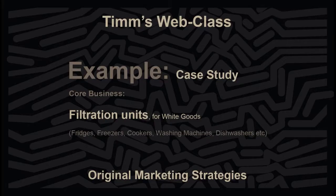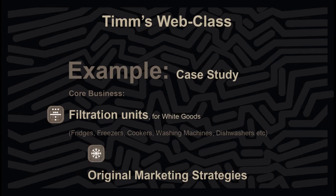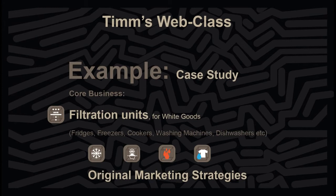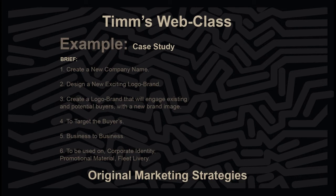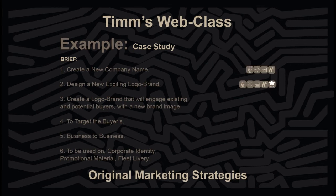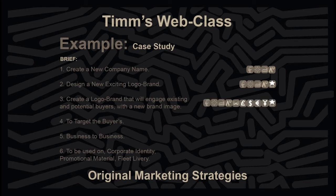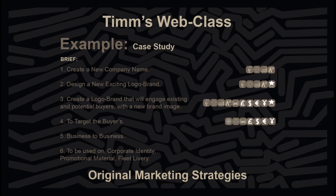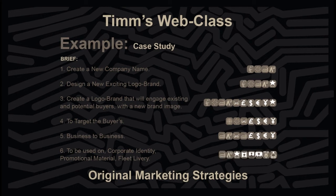Example Case Study: Core business — filtration units for white goods: fridges, freezers, cookers, washing machines, and dishwashers. The brief: 1. Create a new company name. 2. Design a new, exciting logo brand. 3. Create a logo brand that will engage existing and potential buyers with a new brand image. 4. Target the buyers. 5. Business to business. 6. To be used on corporate identity, promotional material, and fleet livery.